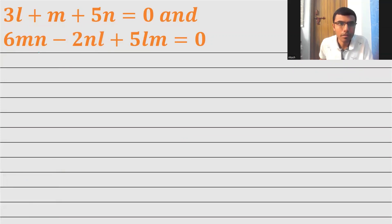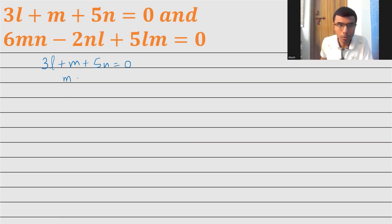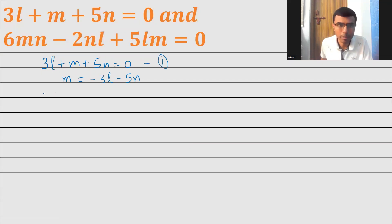Now let's see how to solve it. The equations are there for your reference. First, write down the first given equation: 3L plus M plus 5N is equal to 0. This is my first equation. Now I'm going to send 3L and 5N to the other side, so my M will be nothing but minus 3L minus 5N. I can mark this as equation one so that I could use it at any point of time.